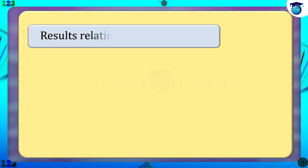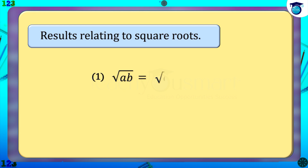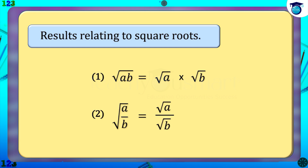Let's see some useful results relating to square roots. First, root of ab equals root a multiplied by root b. Second, root of a by b equals root a divided by root b. Also, some algebraic identities can be applied in the simplification of square roots.